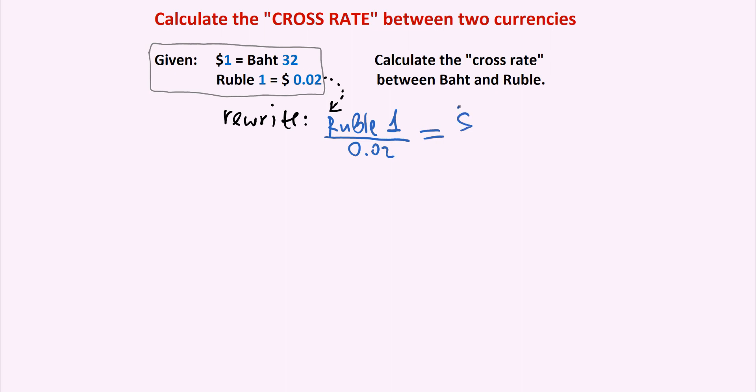We take ruble 1 and divide it by 0.02, and we do the division by 0.02 for the right-hand side as well, where we currently have two cents. So 0.02 US dollars is also divided by 0.02. And what we get is the following.